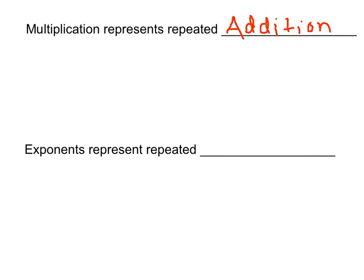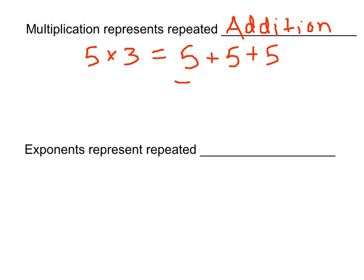If we had 5 times 3, what are you actually doing when you write 5 times 3? What are you asked to find? Well, 5 is being added to itself 3 times. Multiplication represents repeated addition, so this says take 5 and add it to itself 3 times: 1, 2, 3. We get 5 plus 5 plus 5, which we know is 15.